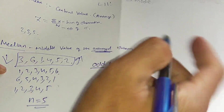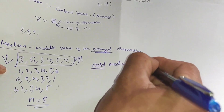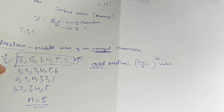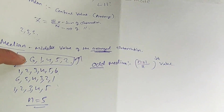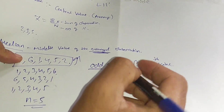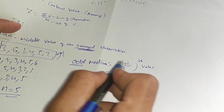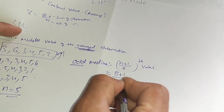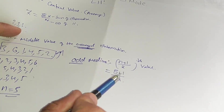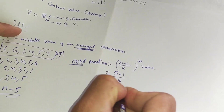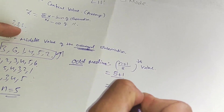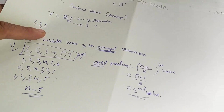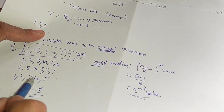Using the odd formula: n is 5, so (5+1)/2 = 6/2 = 3. So the third value is the median. Counting 1, 2, 3 — the third value is the median of those observations.